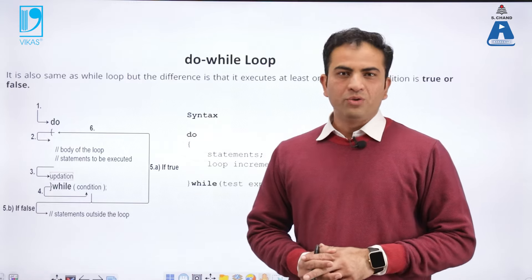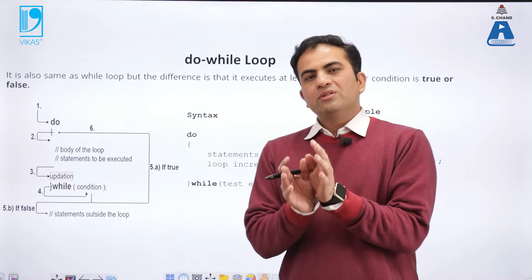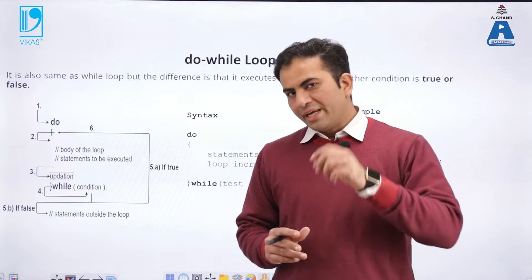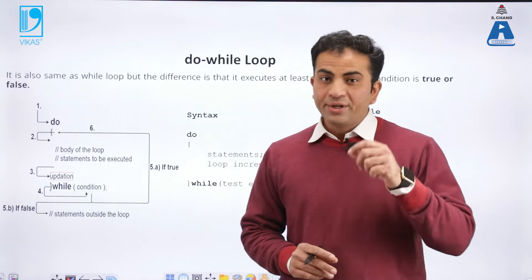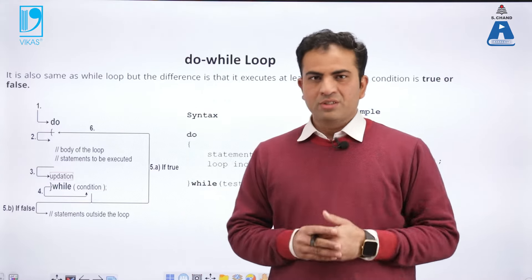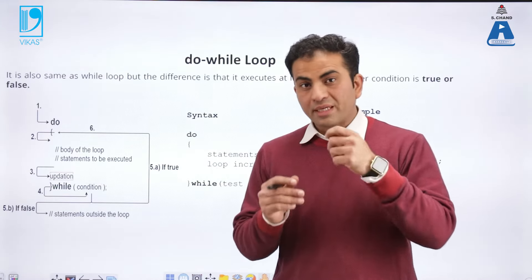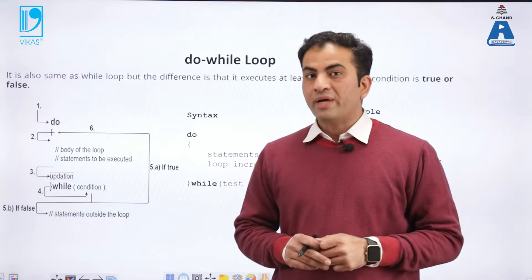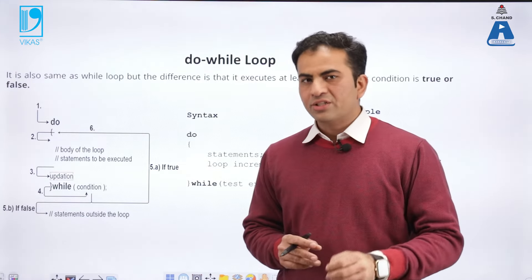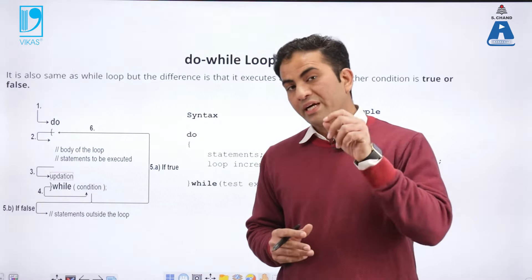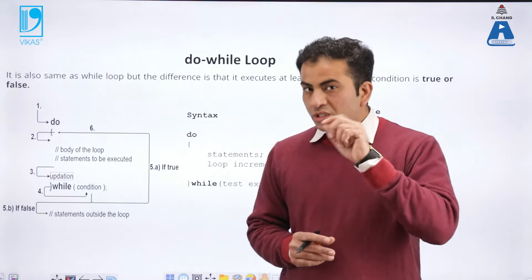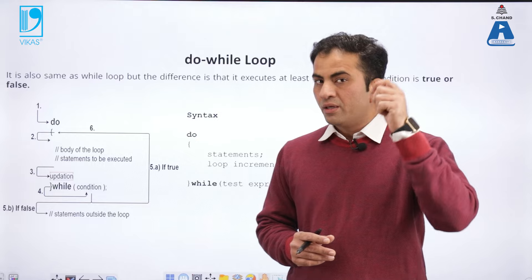The next loop is the do-while loop. Do-while is similar to the while loop, but with one key difference: in the do-while loop, the program runs once first — whether the condition is false or not, it does not care. If my condition is false, the program still runs once. This is the difference between the while loop and the do-while loop.